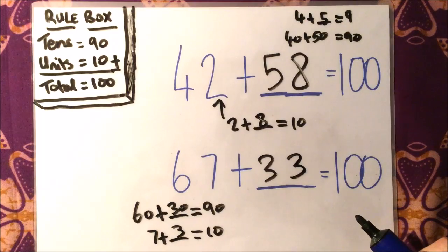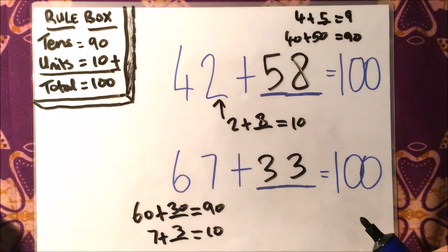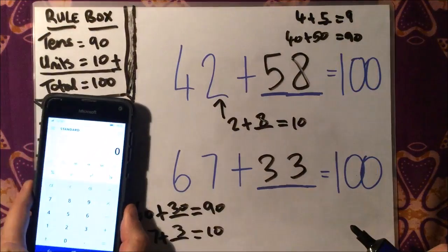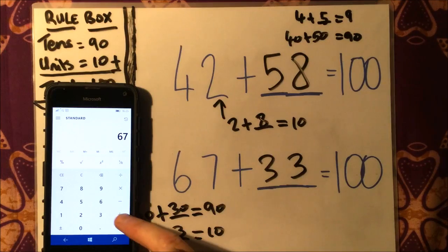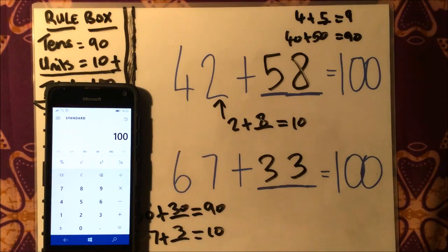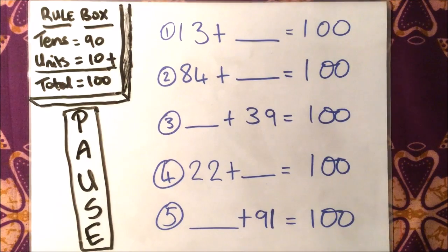So 67 add 33 makes 100. If you don't believe me, well, let's just check it on the calculator. 42 add 58 makes 100, of course, and 67 add 33 also makes 100.